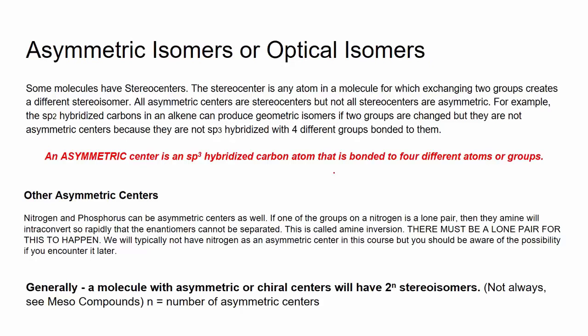A stereocenter could also be that pi bond, so be careful with the semantics. An asymmetric center is a chiral center, and it's also a stereocenter, but not all stereocenters are asymmetric. We're focusing on sp3 hybridized carbons with four different atoms or groups. Note that nitrogen and phosphorus can also be asymmetric centers, but not for this class. When we have an asymmetric center, we will generally have 2^n stereoisomers, though we'll talk about exceptions like meso compounds.